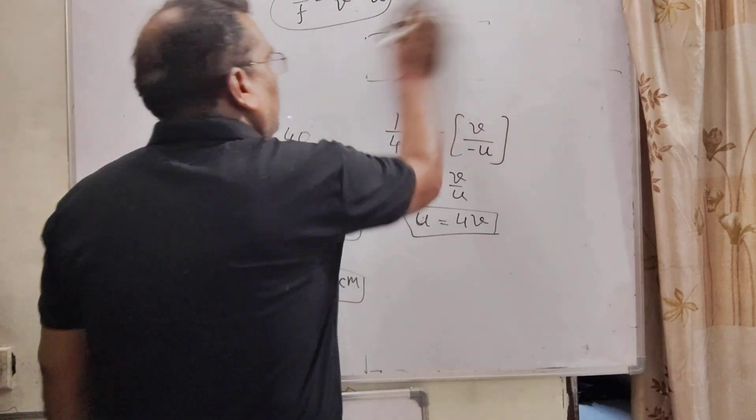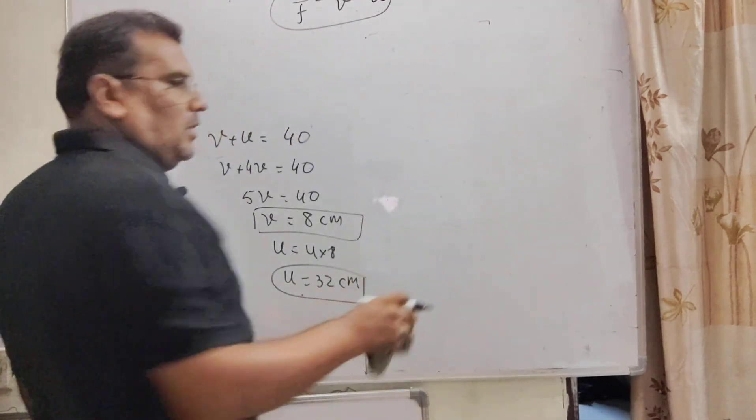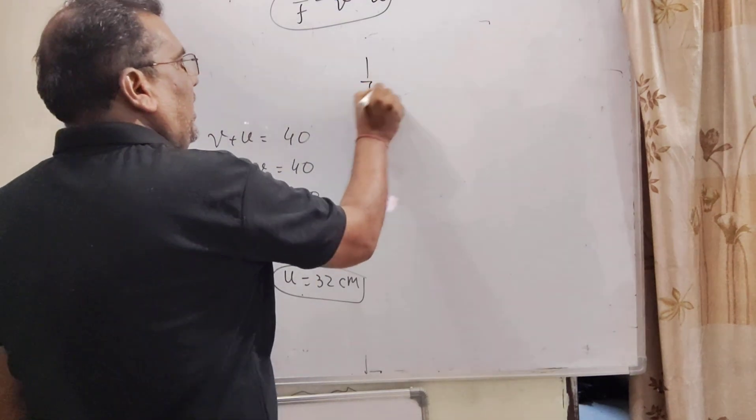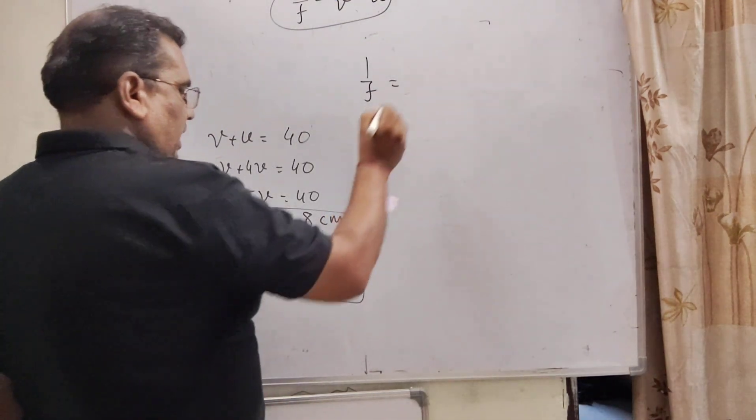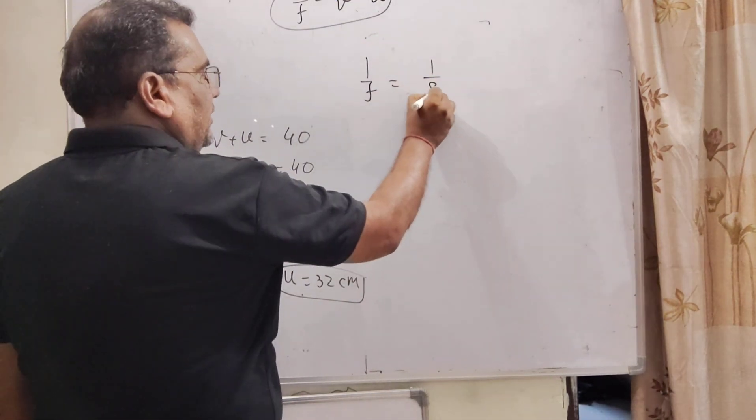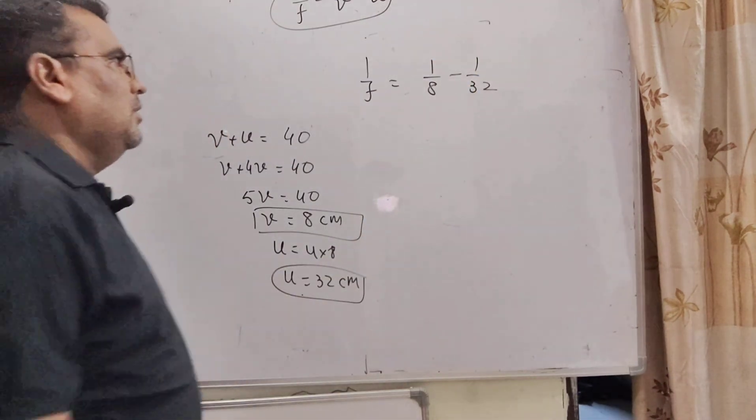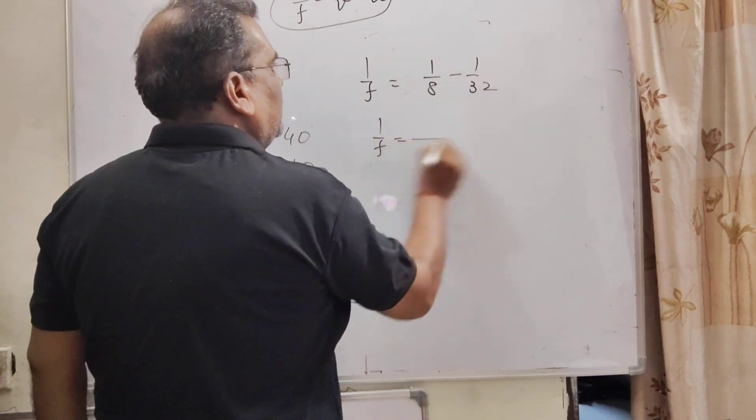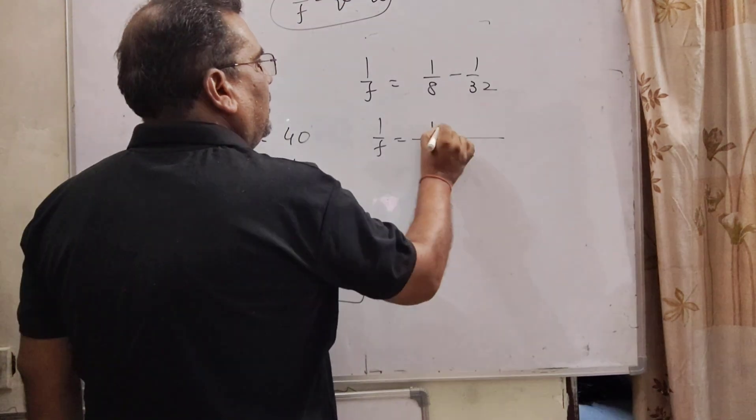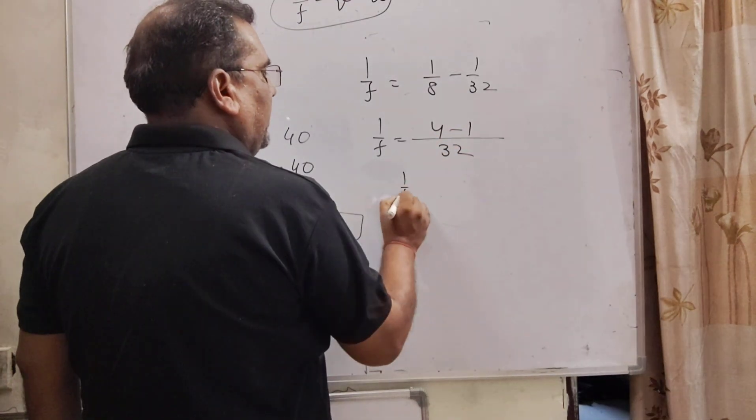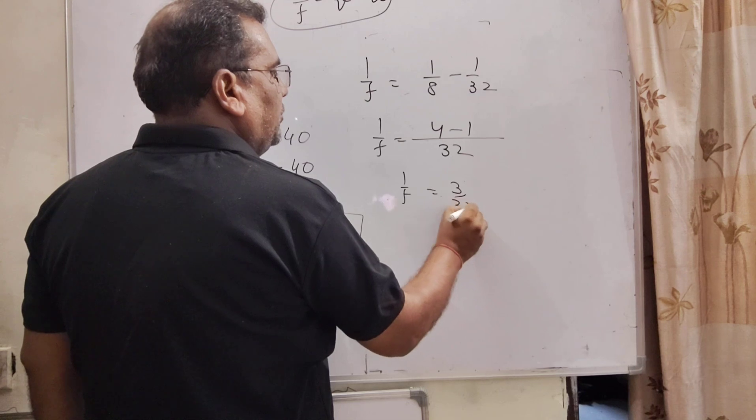Now, substitute the value in mirror formula. Here mirror formula is 1 by F, 1 by V is 1 by 8 and minus 1 by U is minus 1 by 32. So 1 by F is equal to 4 minus 1, then 3 by 32.